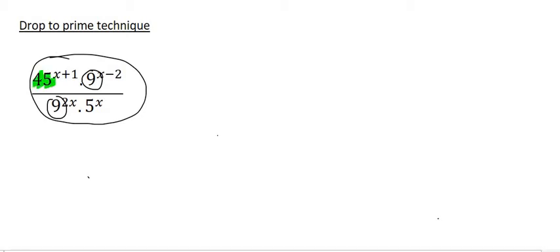So what we do is we take each number. So we'll start with the 45. And we're going to break that down as far as possible. And we've already seen that that's the same as 3 squared times 5. So then we're going to put a bracket and put the exponents, x plus 1, because that's the exponents that it originally had.